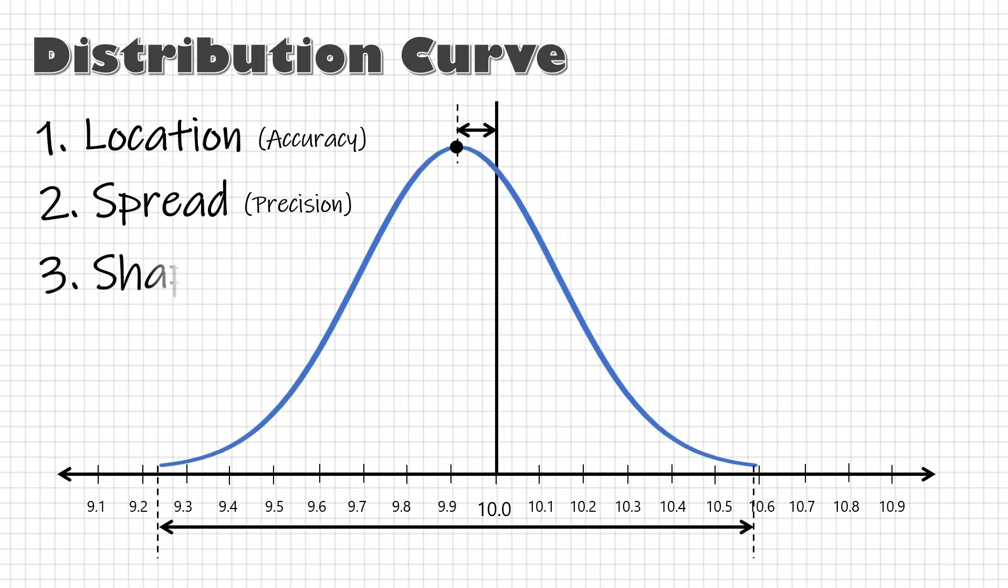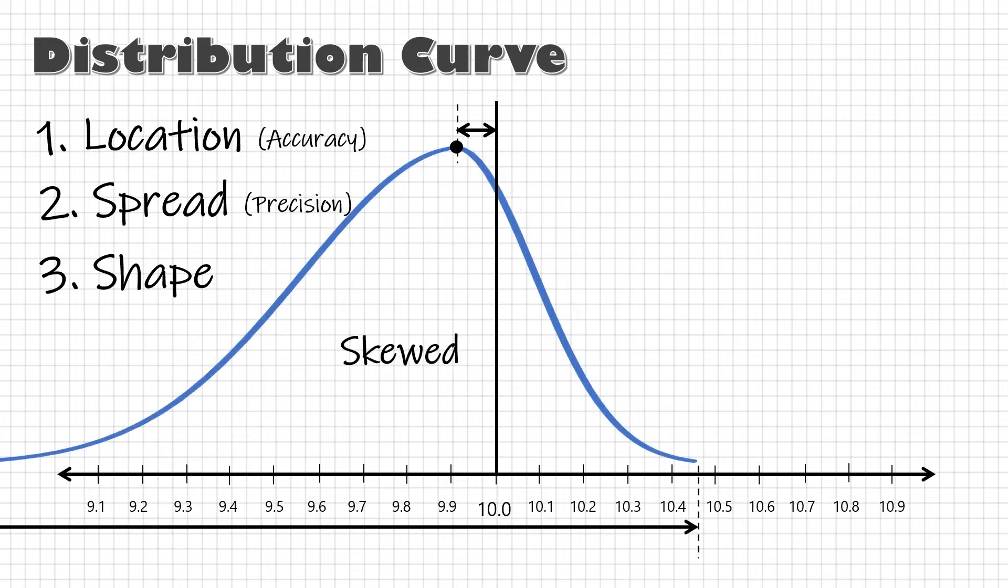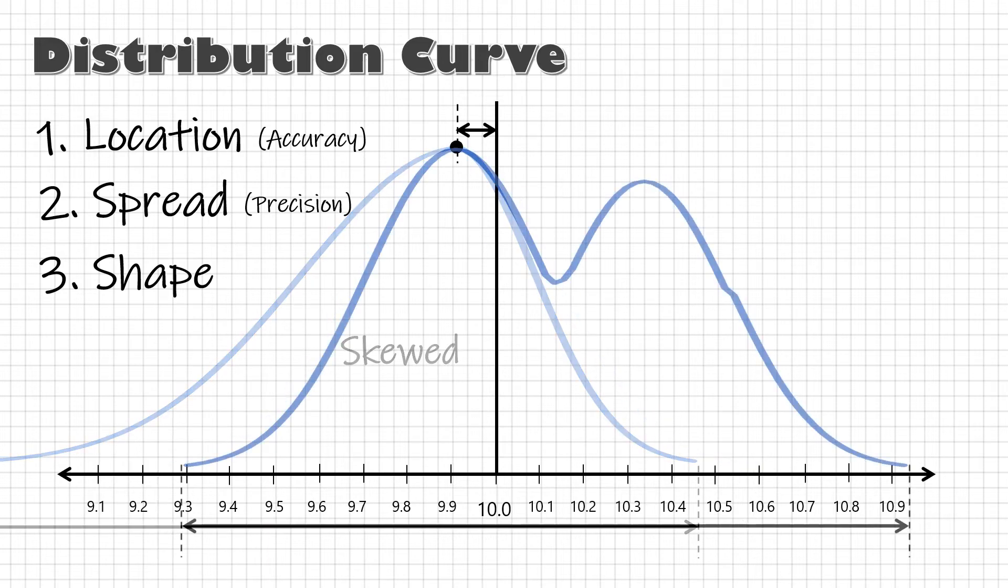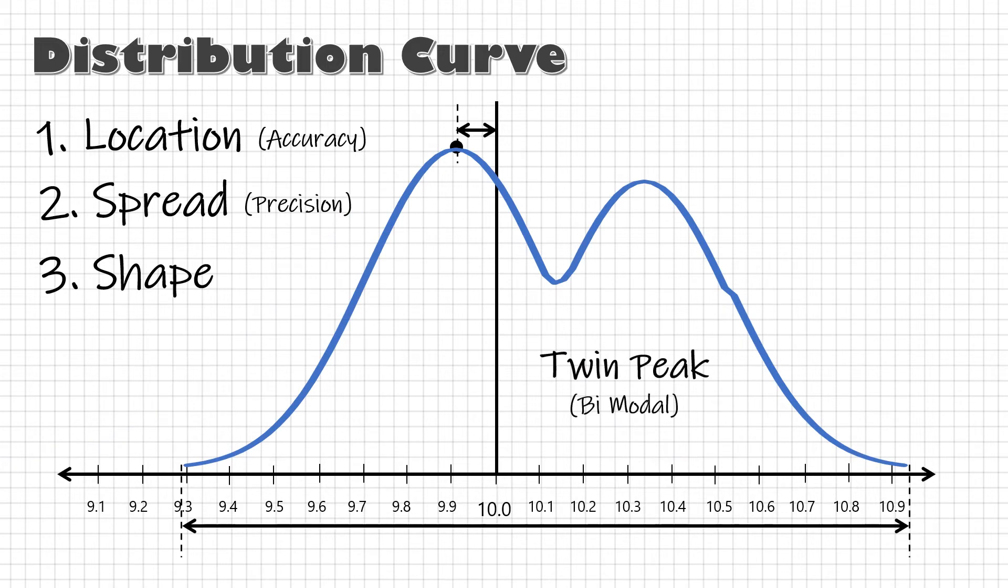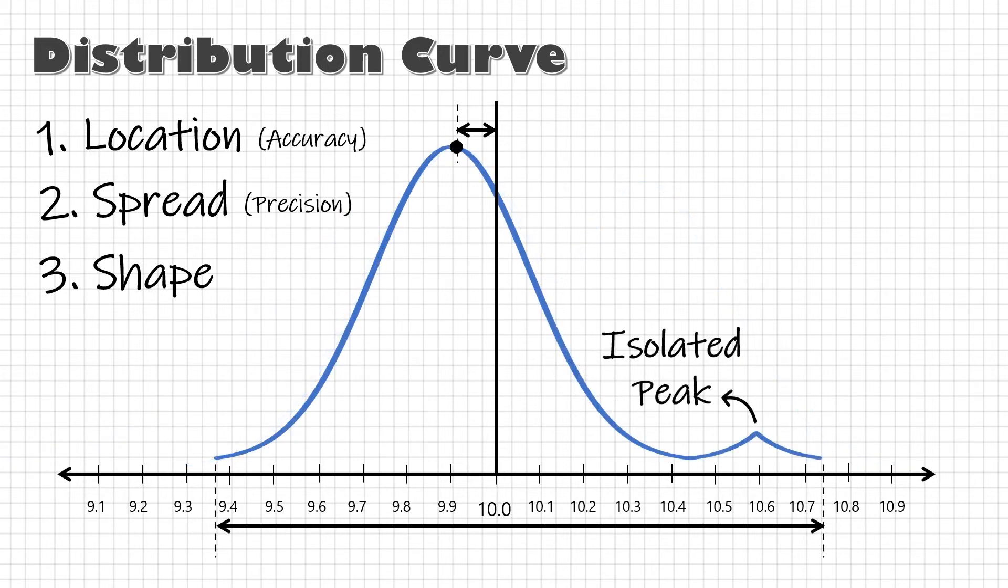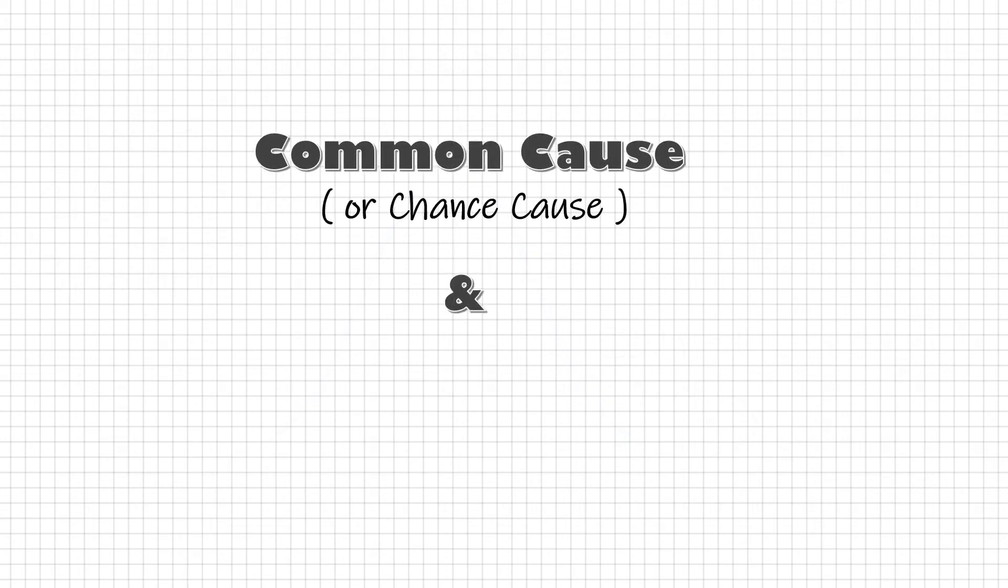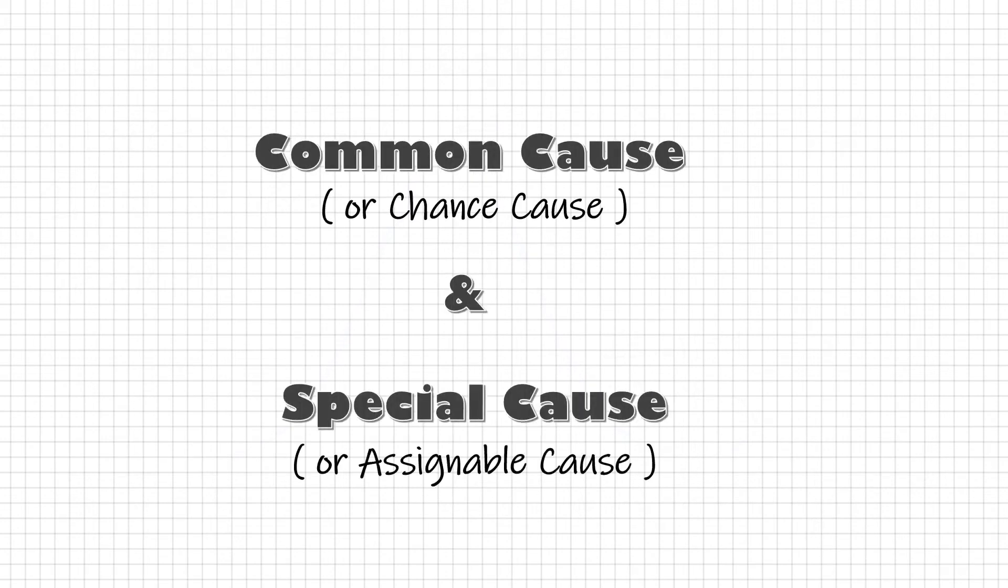And finally, shape. Sometimes the distribution is not symmetrical. Process curve can become like this or this or this. To understand why this can happen, let's go through the difference between common cause and special cause.